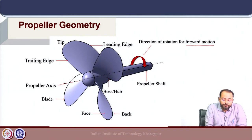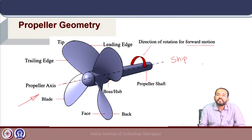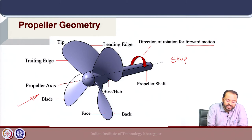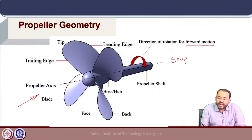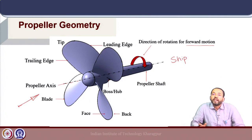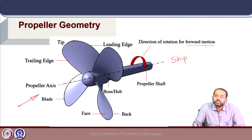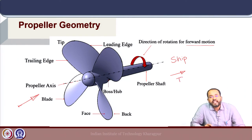The boss or hub is the central structure on which the blades are placed. The direction of rotation is very important to define the edges of the blade. If we look at the propeller from behind the ship and the direction of rotation is clockwise to produce forward thrust, it is called a right-handed propeller.